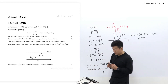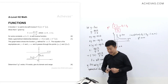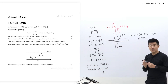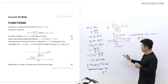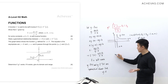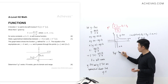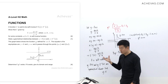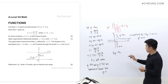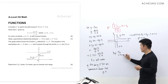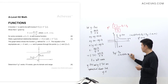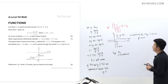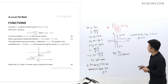Now we want to determine the domain and range of the composite function gf. The domain of gf is simply the same as the domain of the first function, f. The domain of f is all real numbers except a, so it is (−∞, a) union (a, +∞).